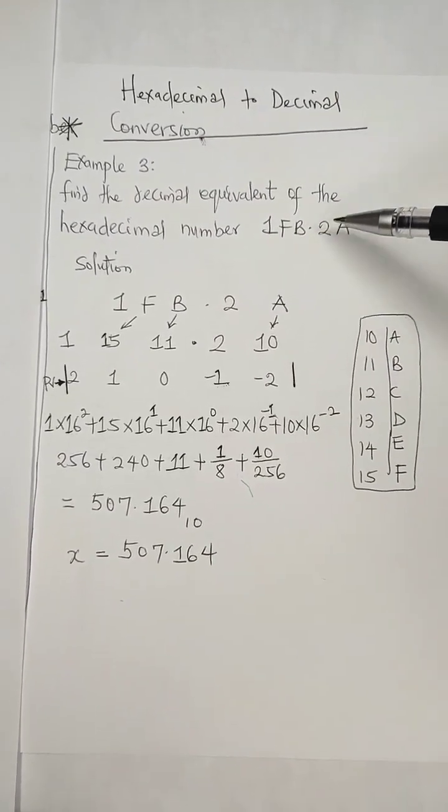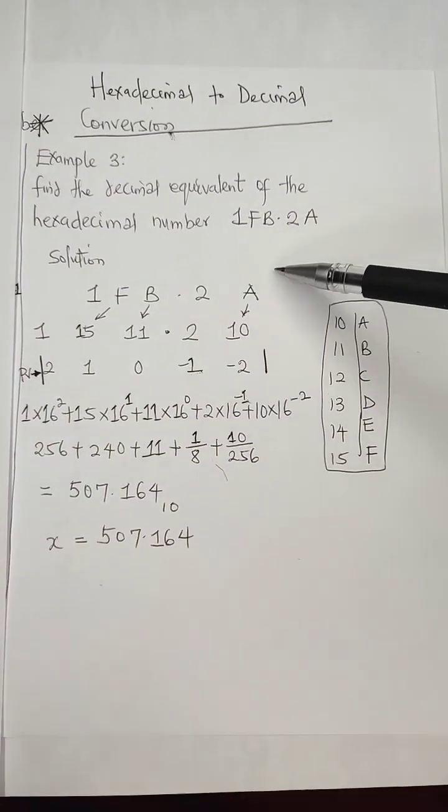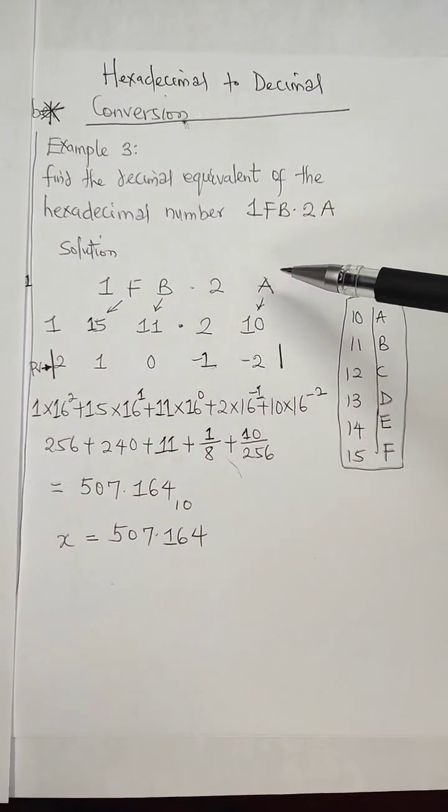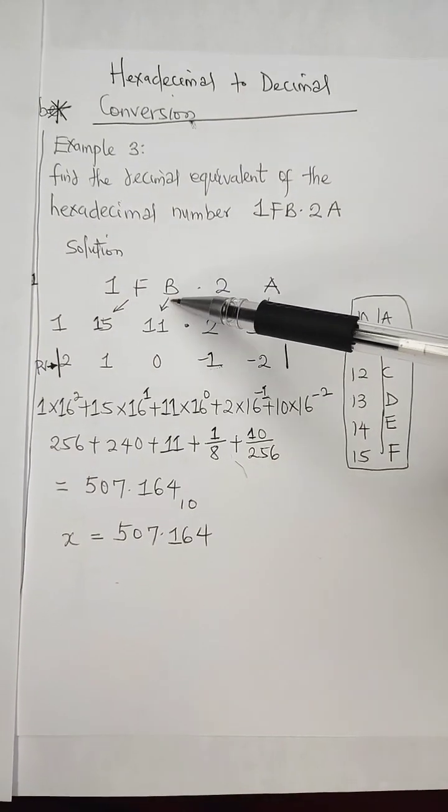So we have 1FB.2A. The first thing to do is spread out this value, 1FB.2A. And then, what is F, what is B, and what is A?